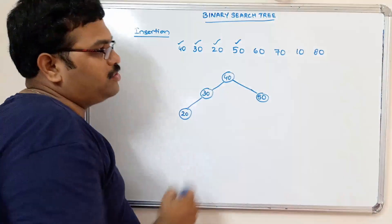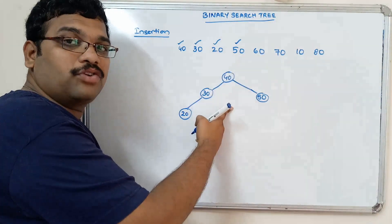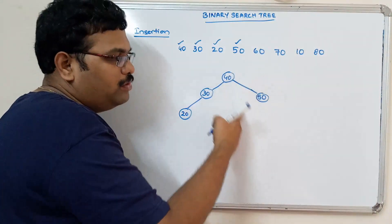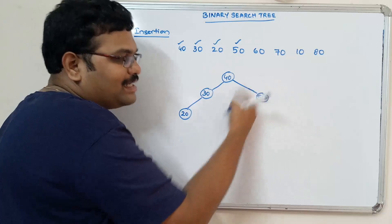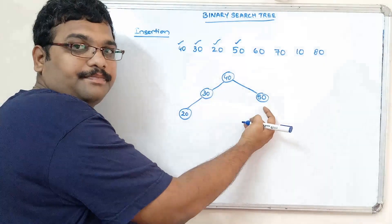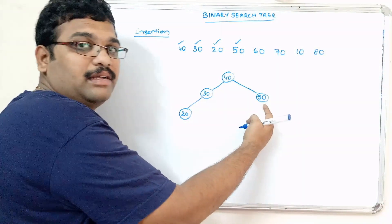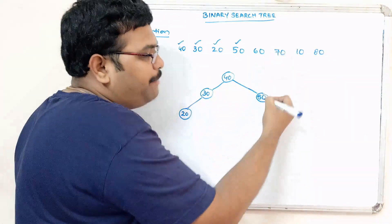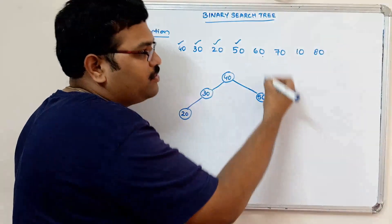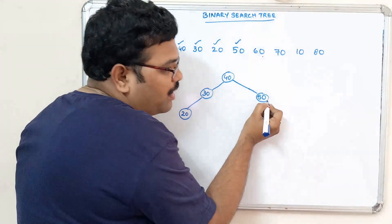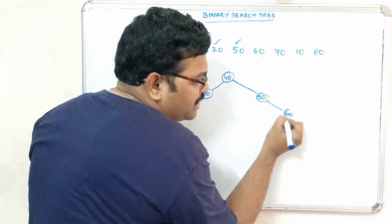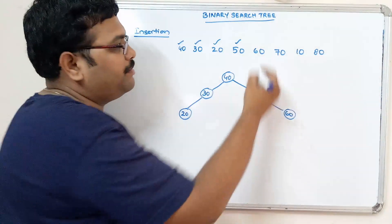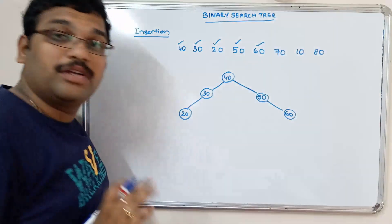Coming to 60. The tree is not empty. 60 is greater than 40, so 60 belongs to the right subtree. In the right subtree, the root is 50. 60 is compared with 50. 60 is greater than 50, so 60 should be placed to the right side of 50. The position of 60 is at the right subtree of 50.